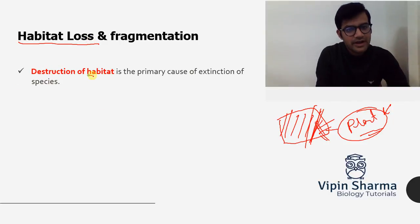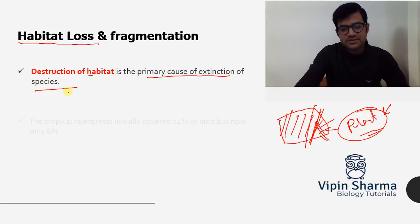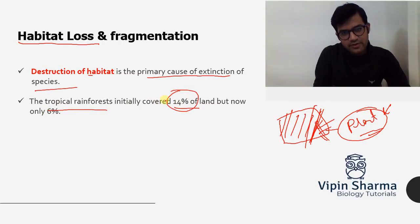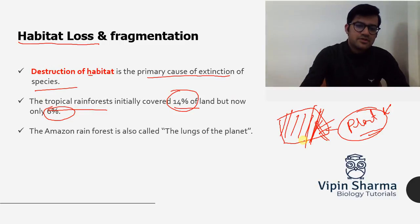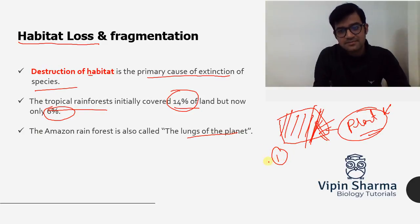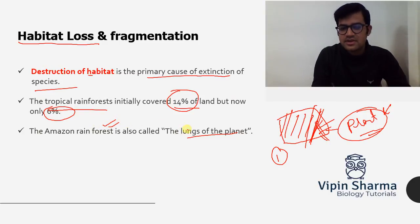Destruction of habitat is a primary cause of extinction of species. A key fact: the Earth was once covered by 14–15 percent tropical rainforest, but now it is covered by only 6 percent — so we have removed a huge portion. The Amazon rainforest is known as the lungs of the planet because of its massive oxygen production, but biodiversity losses and deforestation are hampering this function.